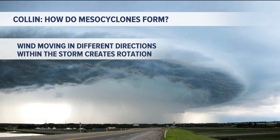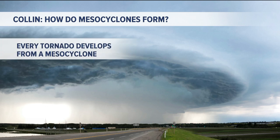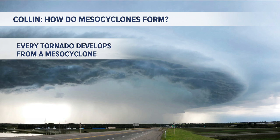Wind moving in different directions at different layers of the atmosphere is what helps create that rotation inside of a thunderstorm. So when you get a cumulonimbus cloud — a tall thunderstorm that begins to rotate — that's what's classified as a mesocyclone. Now, every tornado does develop from a mesocyclone,